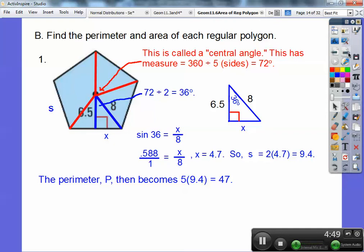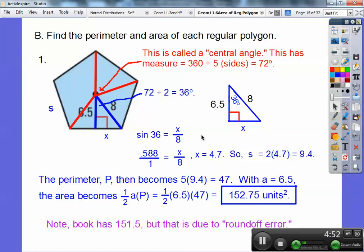All righty. So the area becomes one half the apothem times the perimeter. So one half the apothem is this perpendicular guy, which is 6.5 times the perimeter. And I get 152.75 units squared or square units. Now the book has 151.5, but that's probably due to some roundoff error. I rounded too early. So that's okay as long as we're getting pretty close on that.